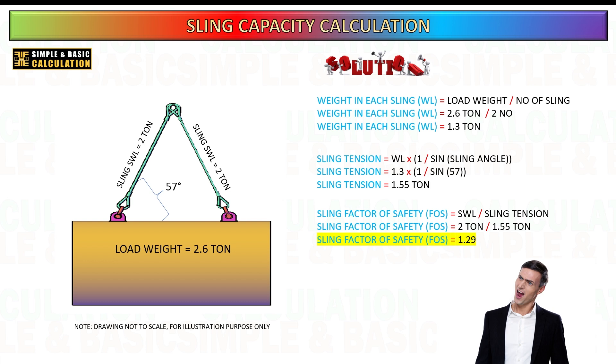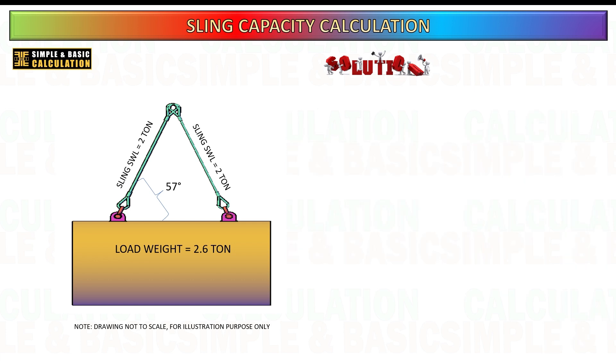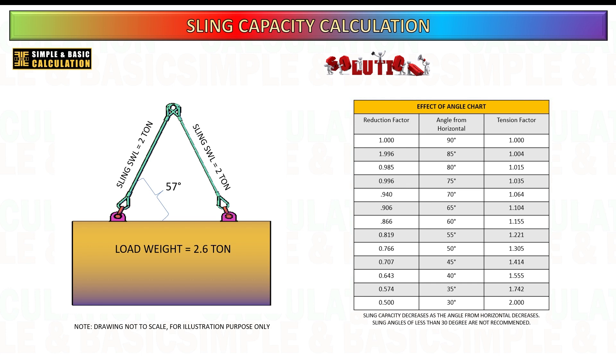However, this approach may be insufficient if the reduction factor due to the sling angle is not accurately integrated into the calculations. The reduction factor adjusts the rated capacity of the sling based on its angle, and neglecting this adjustment can lead to an overestimation of the sling's capacity and potentially unsafe rigging practices. Therefore, it is crucial to include the reduction factor in calculations to ensure that the rigging setup is genuinely safe and meets all necessary safety requirements.